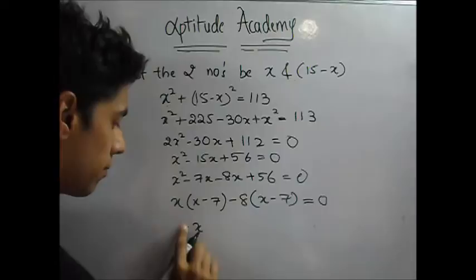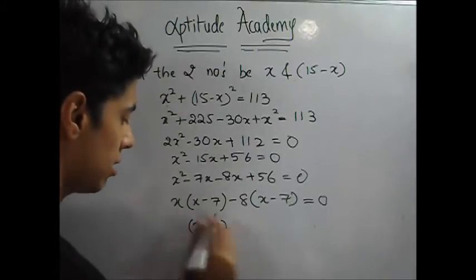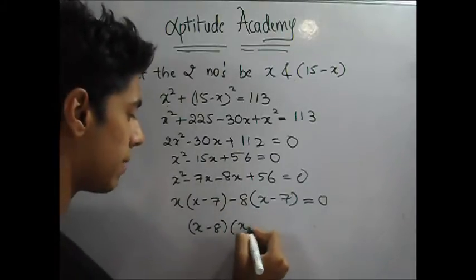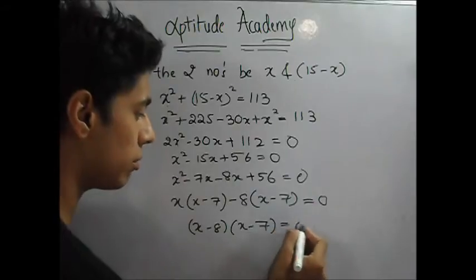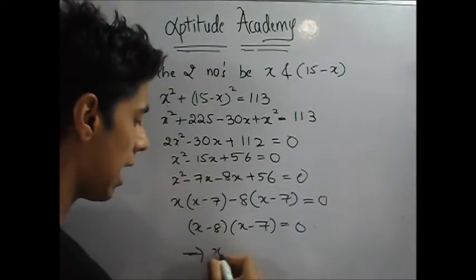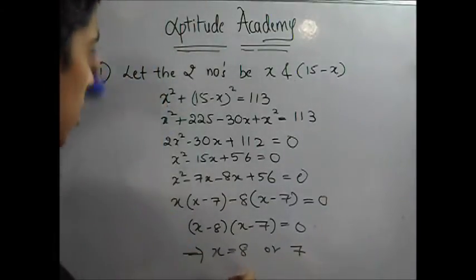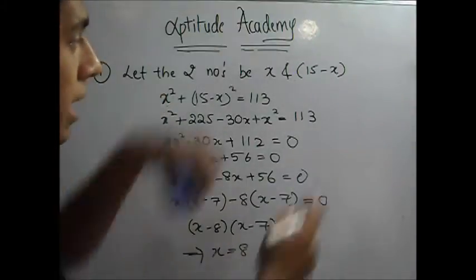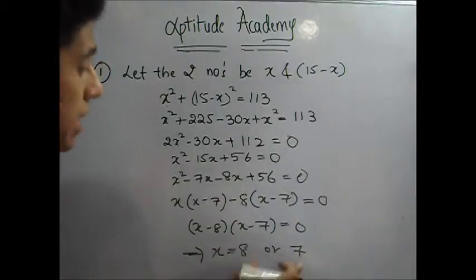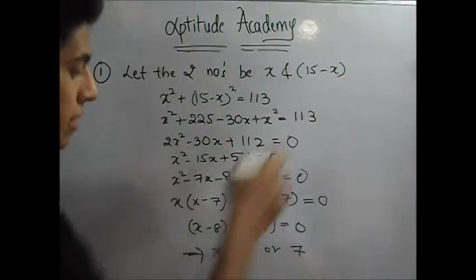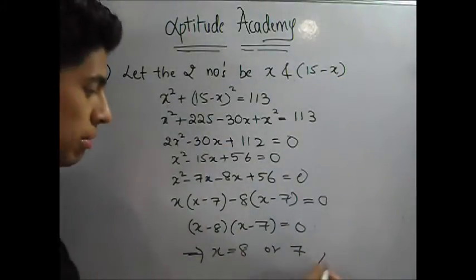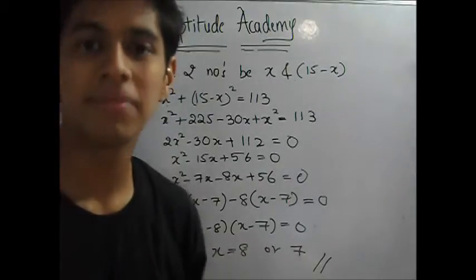So your factors will come out to be x minus 8 into x minus 7 is equal to 0, which implies x is 8 or 7. Now if you take x is 8, then the other number will be 15 minus 8, that is 7. If you take 7 as your number, then 15 minus 7 is 8. So these are your two numbers, 7 and 8. Let's move on to the second problem.